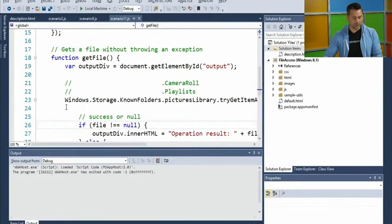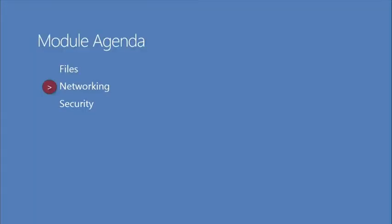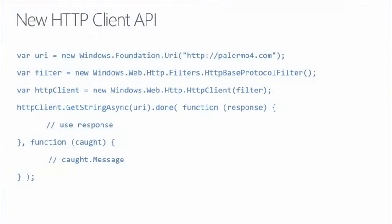I'm going to return to my presentation and tackle the next topic, which is networking. The aka.ms/whatsnew8.1 link will show you additional items I didn't feel were necessary to cover in detail. The one I'd like to get into now, which I thought was very cool, is this new HTTP client API. I wanted to have the code on screen so I can talk through it.